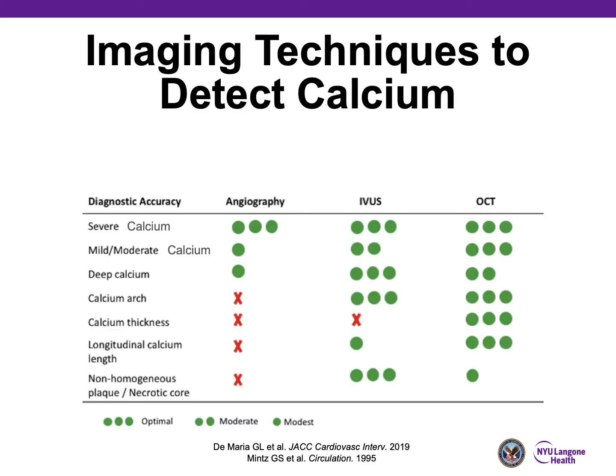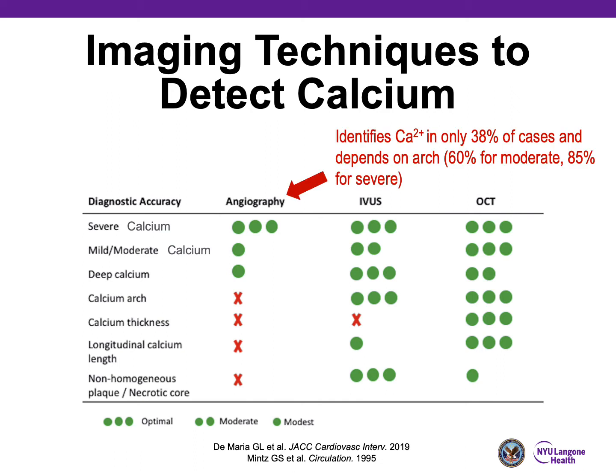There are several imaging techniques to detect calcium. Starting with angiography, angiography alone will only identify calcification in 38% of cases, as it depends on the arc of calcium present. The more severe the calcium, the more likely you are to detect it by angiography. In other cases, you need intravascular imaging to fully understand the depth and extent of calcium. Looking at the difference between IVUS and OCT, OCT can give you three-dimensional parameters while IVUS is better at looking at deep wall calcium.